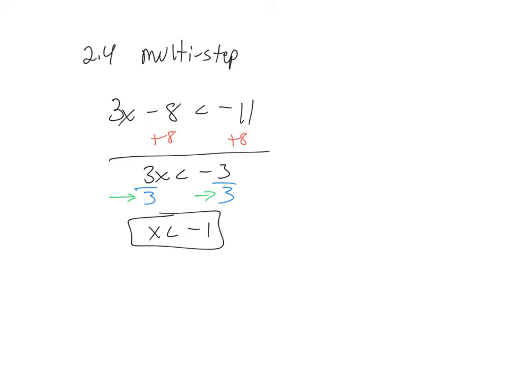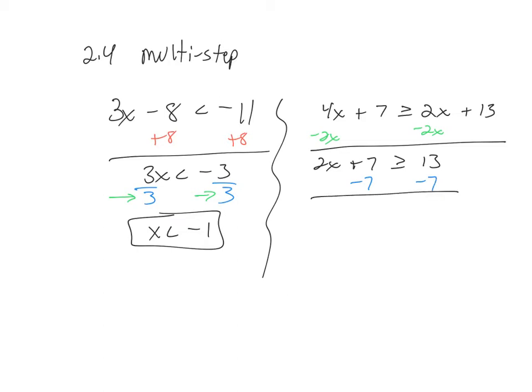Okay, so you could have, or you will have, somewhere you've got x's on both sides. So move the smaller of the x's. Four is bigger, so leave that one alone. Two is smaller. Okay, and the biggest reason for doing that is so that the x part stays positive. You don't have to remember about changing the sign around. So at the very end we'll divide by two.